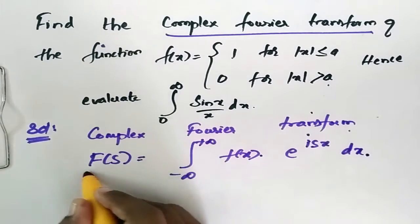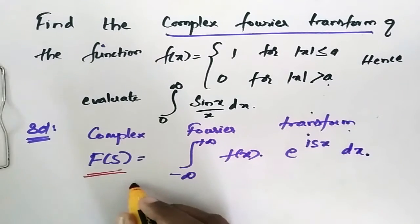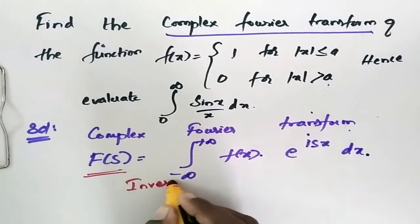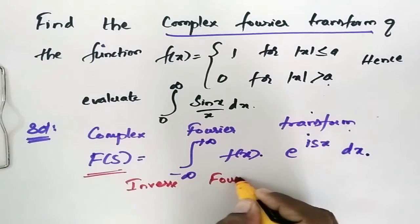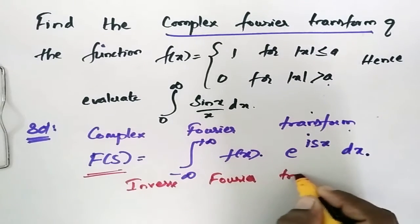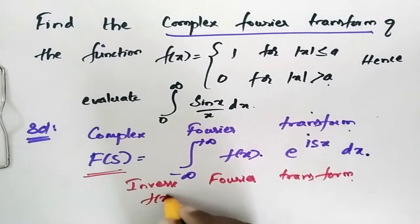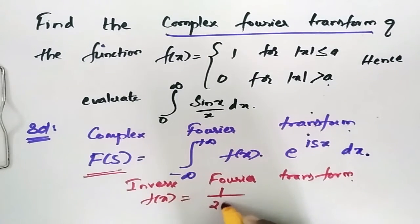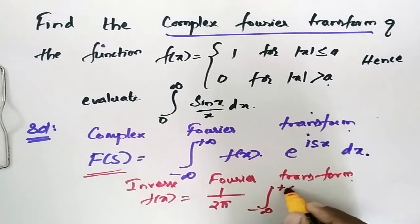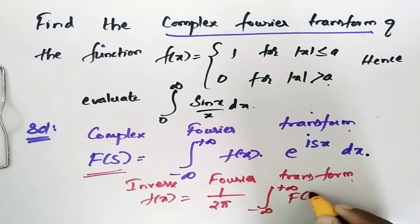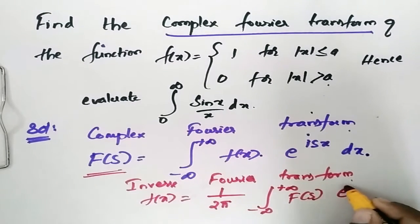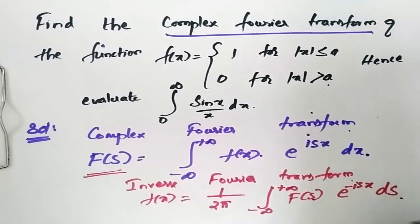Now we have the inverse Fourier transform. The inverse Fourier transform gives f(x) equal to 1 over pi times the integral from minus infinity to plus infinity of F(s) e^(isx) ds.